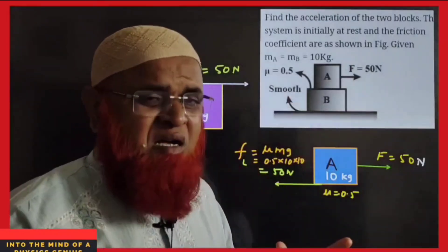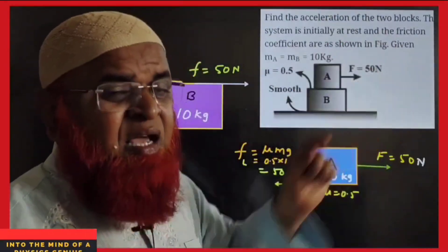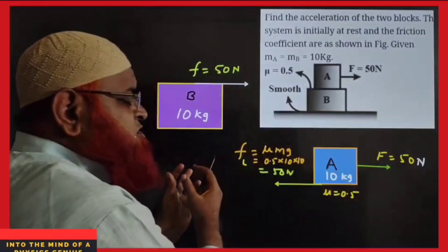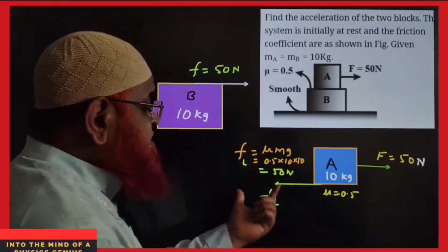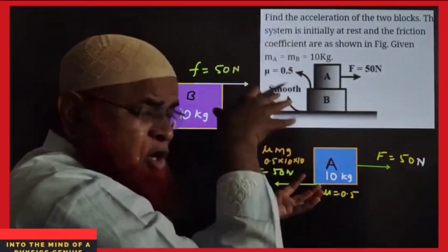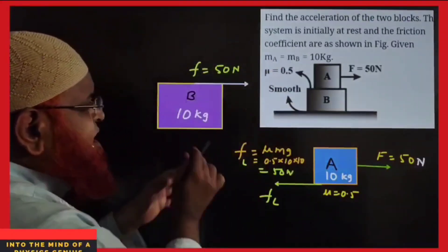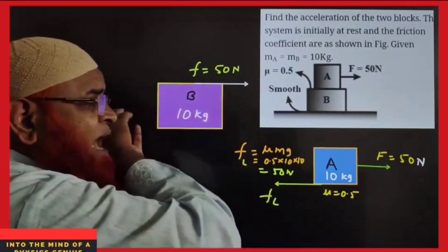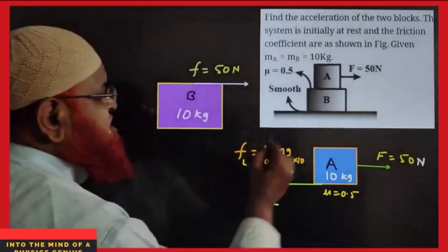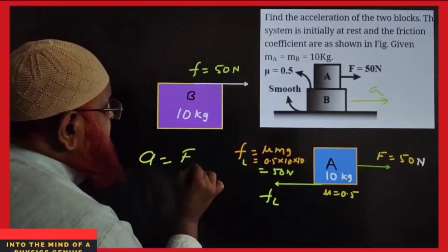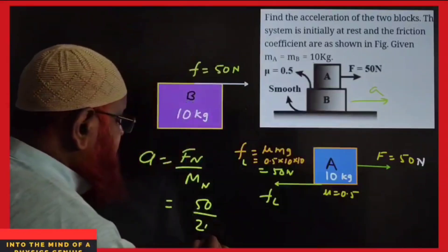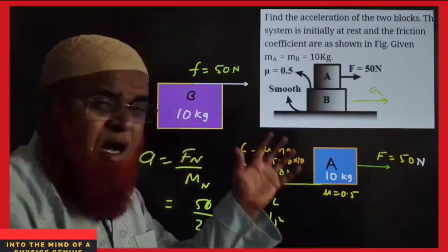Block-over-block concept: two blocks of same mass, force applied on upper block. Limiting friction with μ=0.5 acts leftward on the upper block at 50 newtons, balancing the applied force so both blocks move together. This friction acts as driving force for the lower block. Combined acceleration = net force / net mass = 50/20 = 2.5 m/s² for both blocks combined.